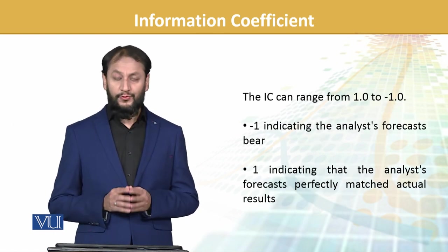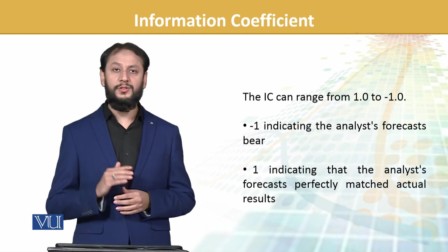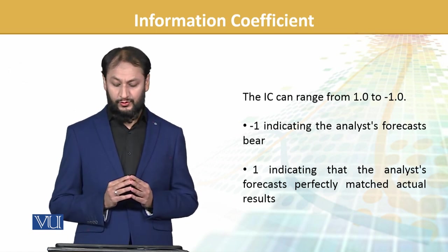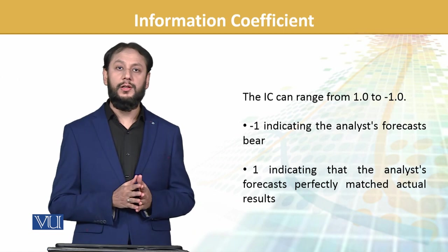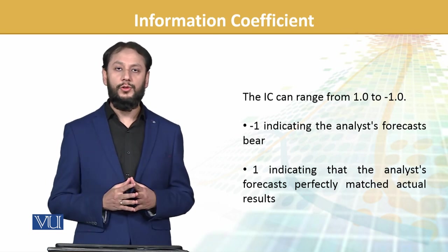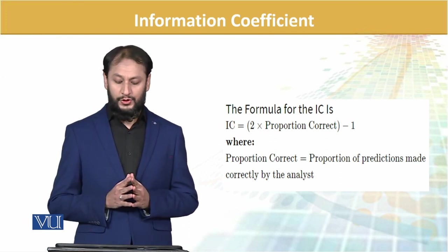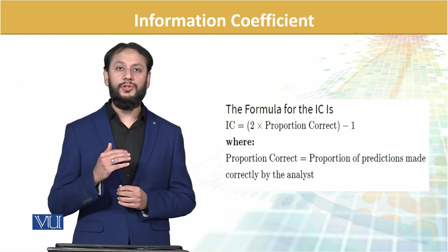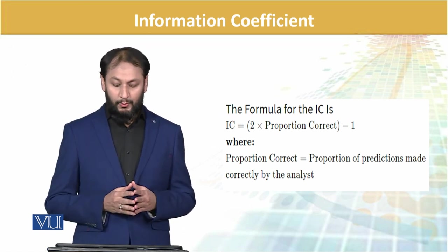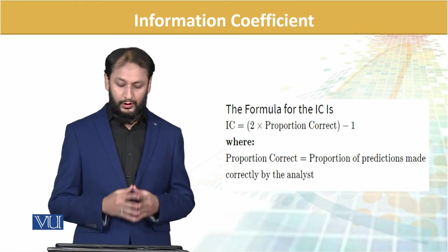Information coefficient can range from 1 to minus 1. Minus 1 indicates analyst forecast is not a good forecasting tool. 1 indicates that analyst forecast perfectly matched actual results — jo usne forecast kiye the, actual results bhi wohi aaye — yani ki 1 is the superior degree. Formula for calculating information coefficient is: 2 into (proportion correct) minus 1 — ki kitne proportion mein aapke results correct hain, yani agar aapne 10 kiye to unme se kitne theek the.